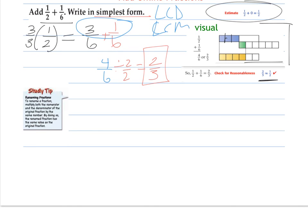So renaming fractions: multiply both the numerator and the denominator of the original by the same number. By doing so, the renamed fraction has the same value. So this is how we create equivalent fractions.